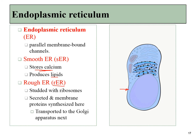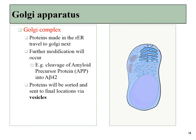When proteins are transcribed from RNA that came from the nucleus, they are next sent to the Golgi apparatus before reaching their final destination. The Golgi apparatus is another phospholipid-bound organelle where proteins are modified. One example of protein modification is the cleavage of a large polypeptide — the amyloid precursor protein — into A-beta 42. From the Golgi, proteins can then be delivered to the plasma membrane via vesicles.